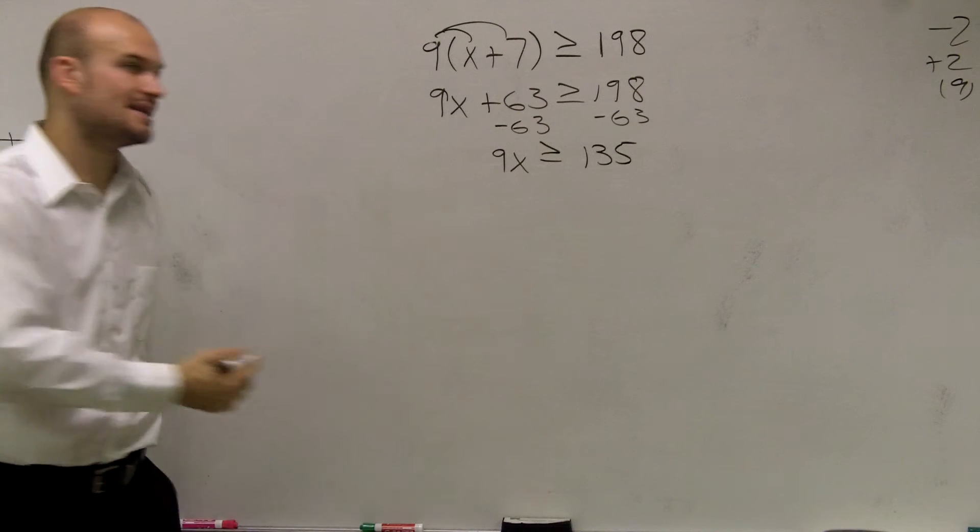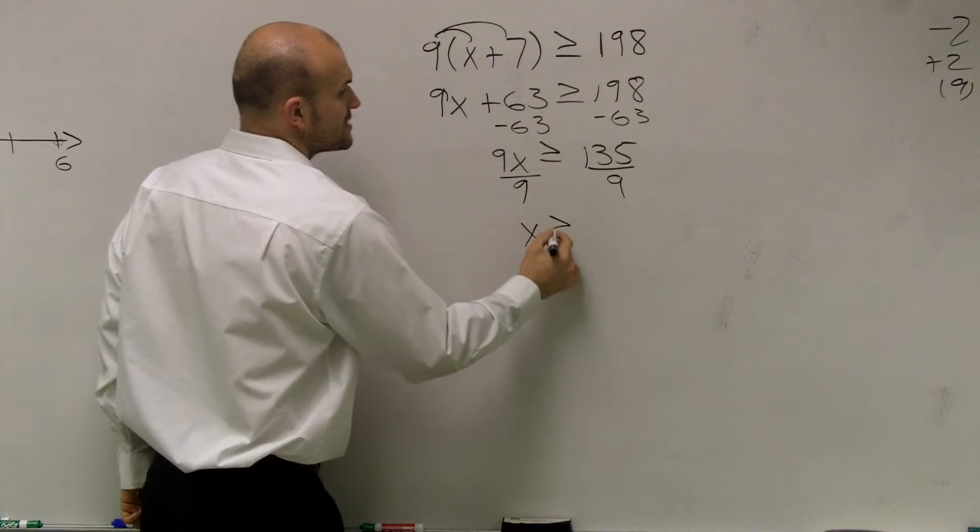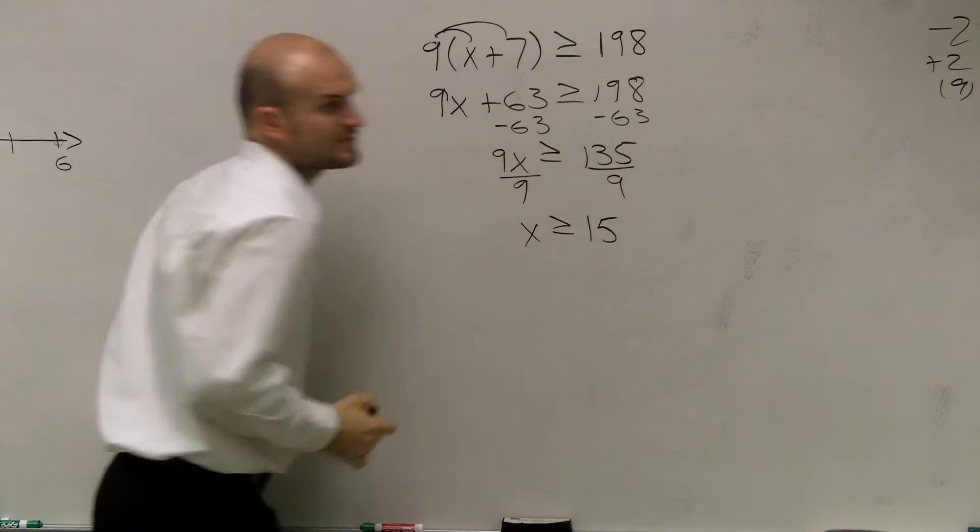Now I need to undo multiplication by 9, so I divide by 9 on both sides. I get x is greater than or equal to 15.